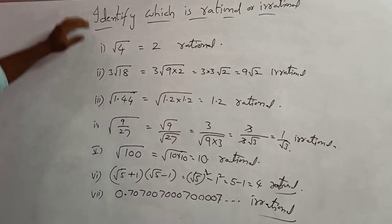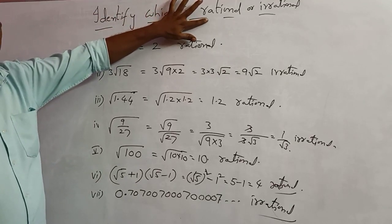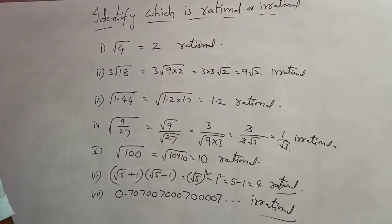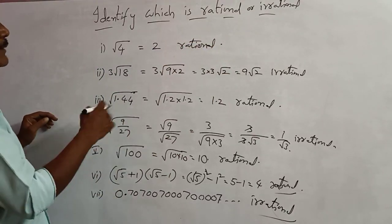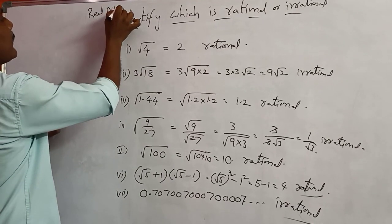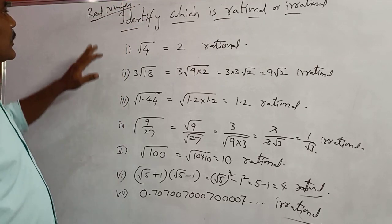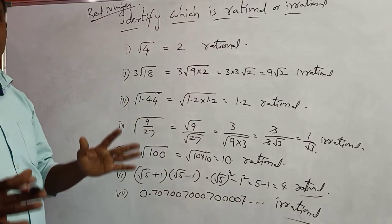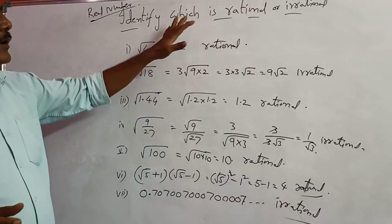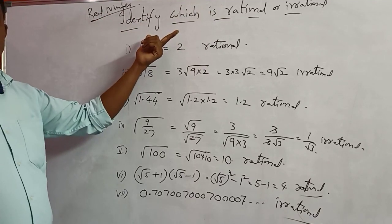Students, you can easily understand the definition of rational and irrational. Rational plus irrational — those two types together form the family called real numbers. Real numbers means the big family, which is rational plus irrational. The sum of all those numbers are called real numbers. This is our chapter name.